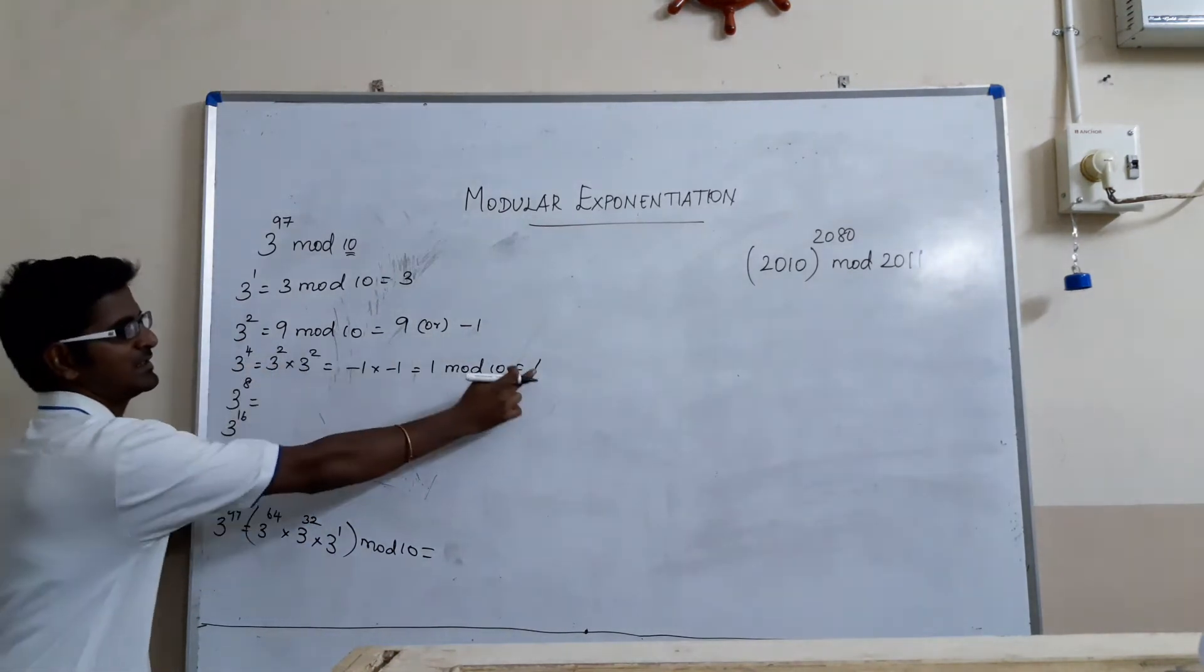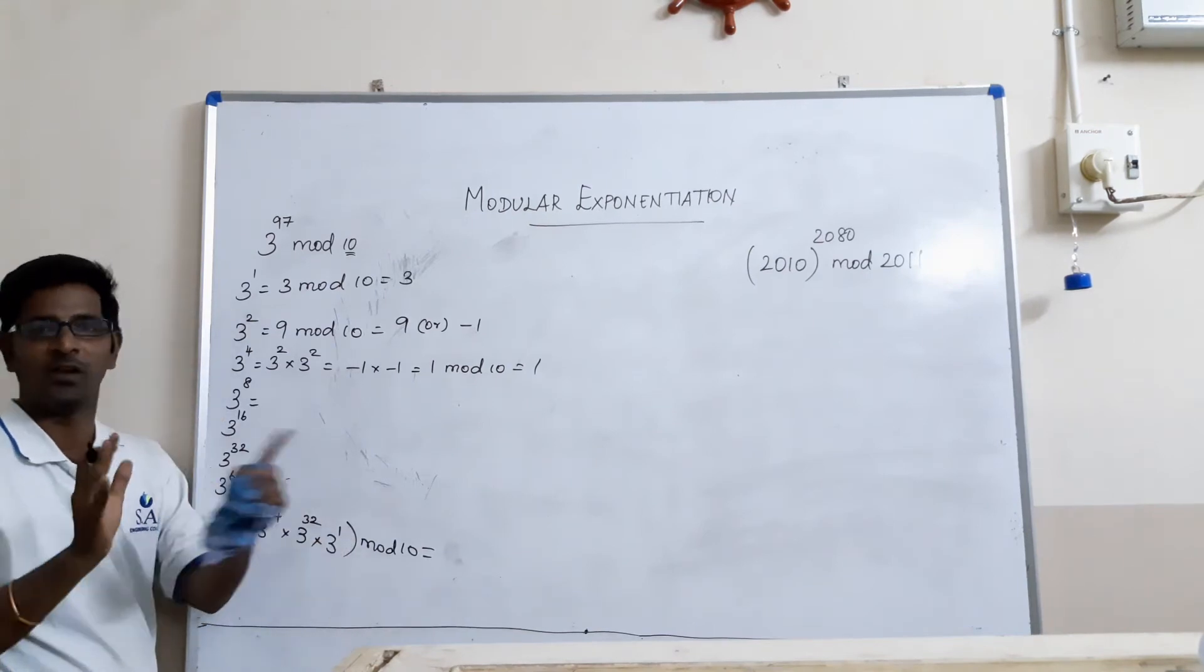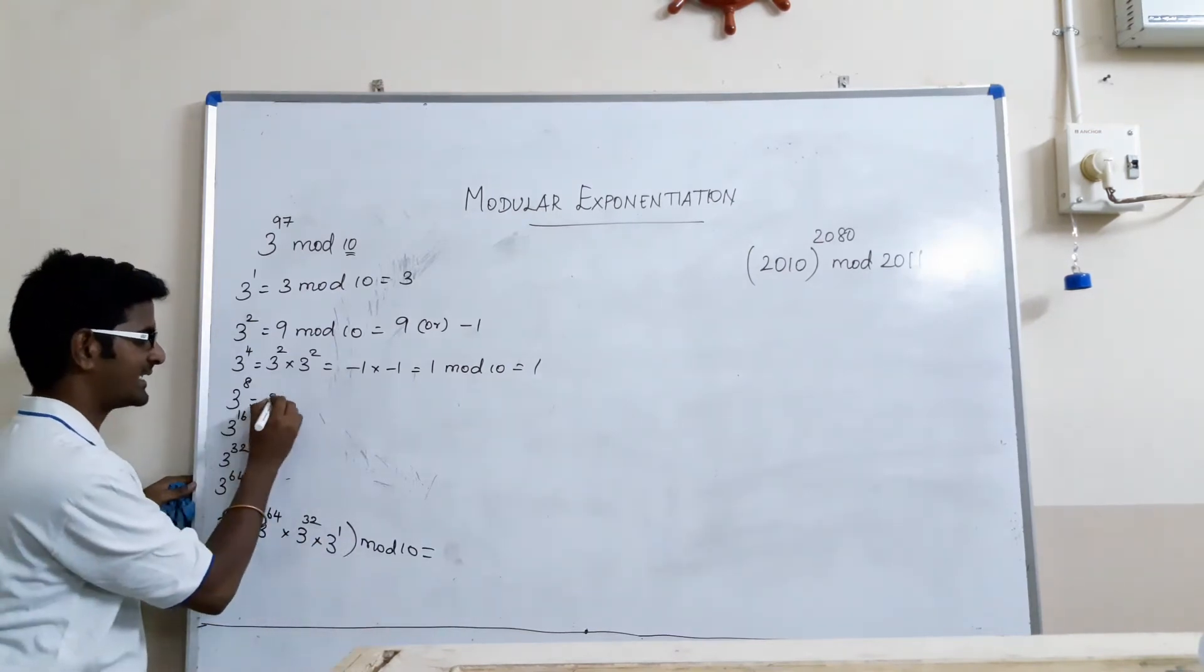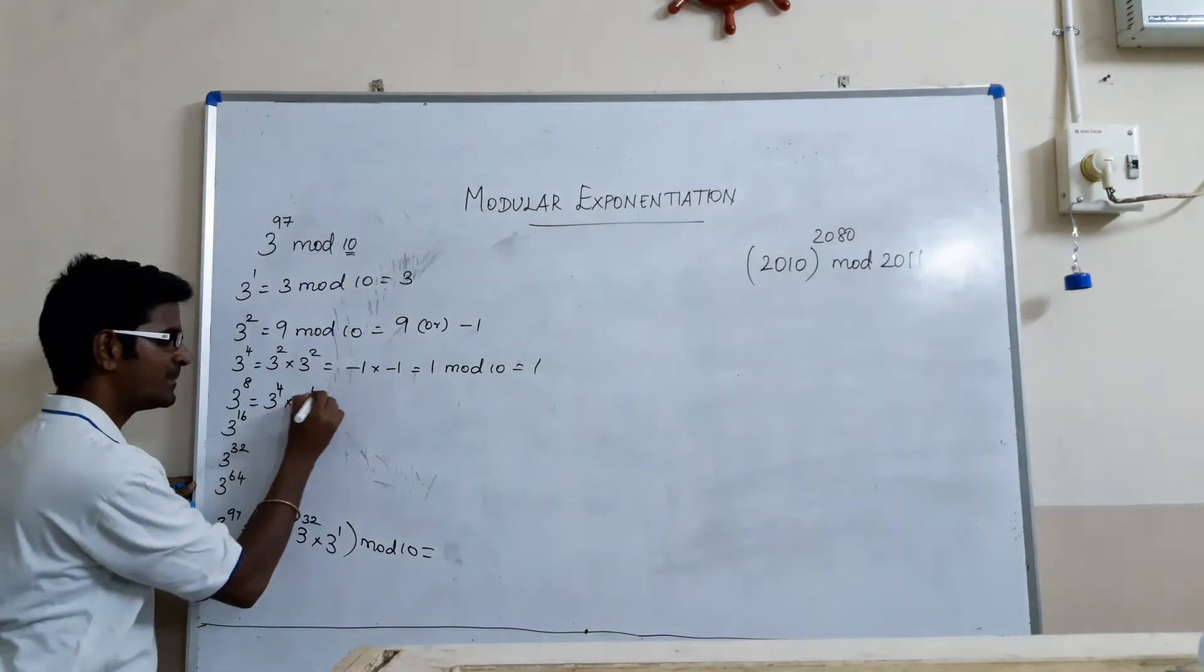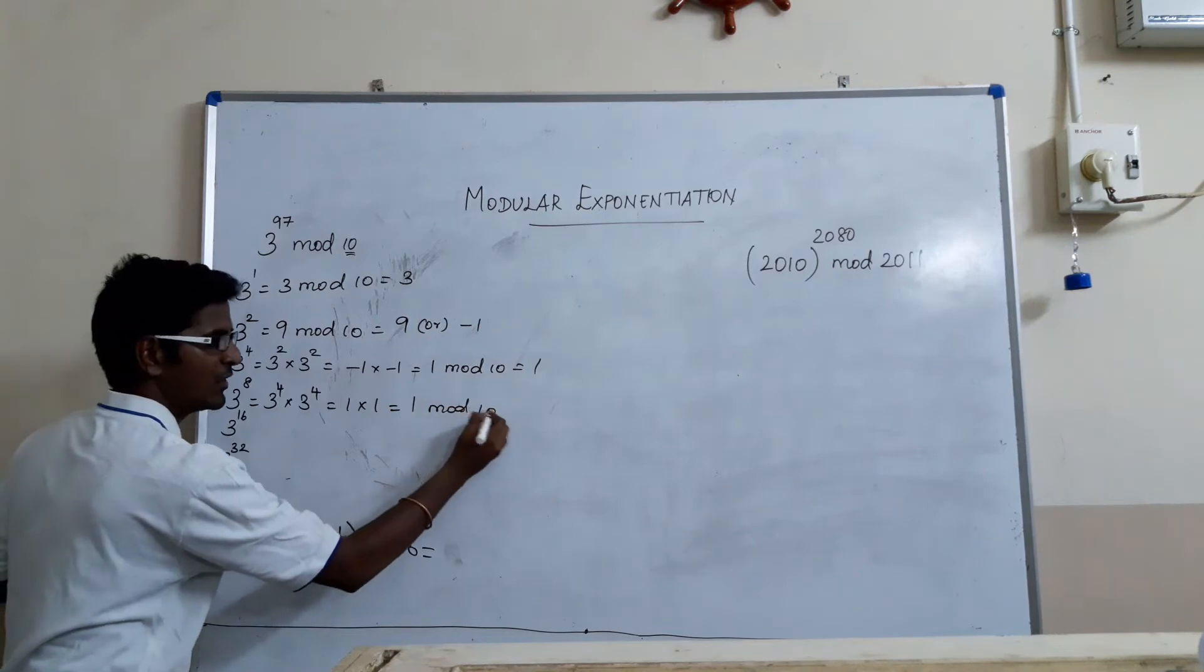So, if 3 power 4 is 1, obviously 3 power 8 is going to be 1 and the forthcoming steps are going to be 1 and 1 only. 3 power 8 can be written as 3 power 4 into 3 power 4 which is equal to 1 into 1 which is equal to 1 mod 10. Again, 1 only.